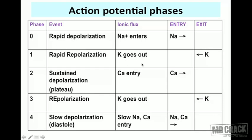During phase 1, potassium exits the cell — shown by a reverse arrow — and that exit causes rapid repolarization. Then during phase 2, calcium starts entering the cell, leading to a sustained depolarization that reaches the peak of the curve. This is called the plateau.